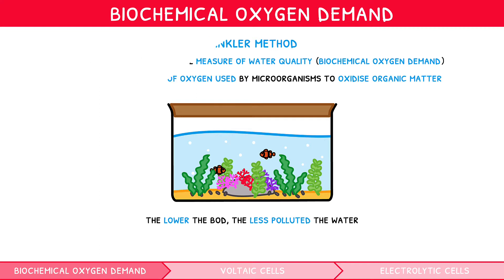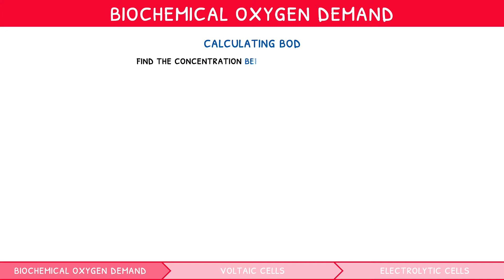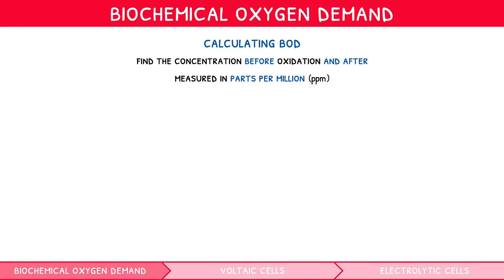But how do we calculate it? We find the concentration of oxygen before oxidation and after, before subtracting these two values. The concentration is measured in parts per million, likely a new unit to you. Let's cover it.